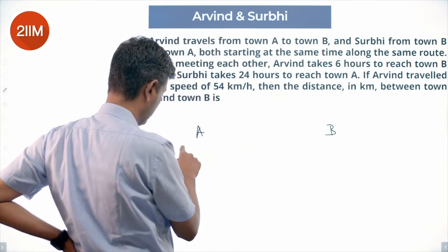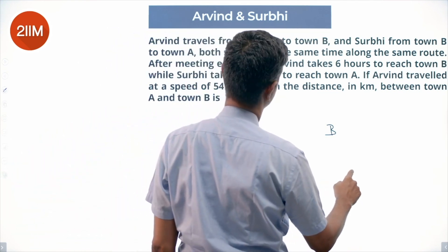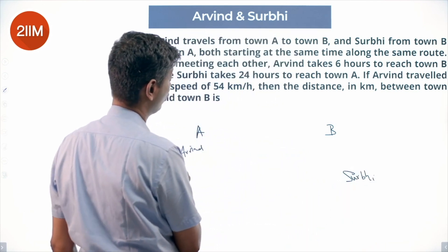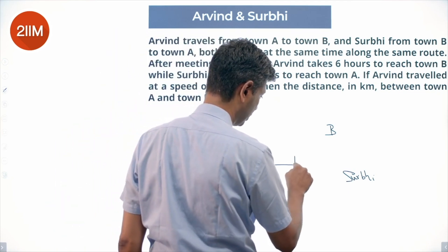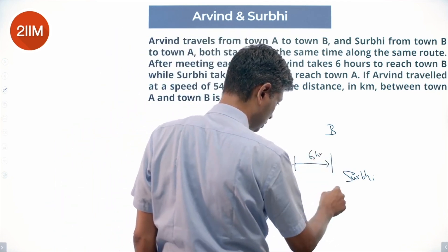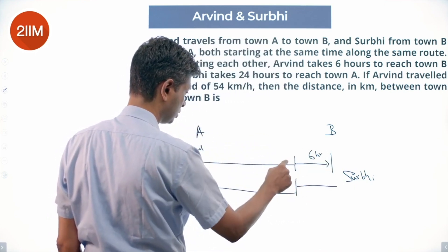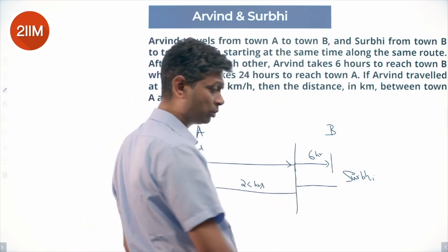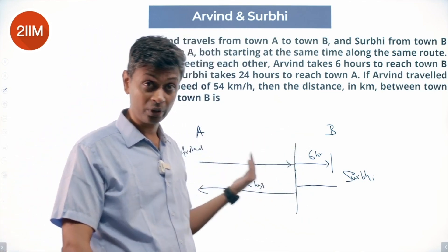Arvind goes from A to B and Surbhi goes from B to A. Arvind takes 6 hours to reach town B while Surbhi takes 24 hours. They meet somewhere — in 6 hours Arvind reaches B from there, and in 24 hours Surbhi reaches A from there. I put the meeting point closer to B since Arvind reaches in 6 hours and Surbhi takes 24 hours.